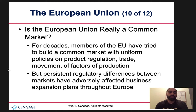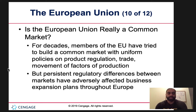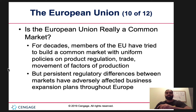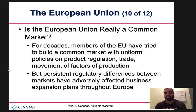Is the European Union really a common market? For decades, members of the EU have tried to build a common market with uniform policies on product regulations, trade, and movement of factors of production. But persistent regulatory differences between markets have adversely affected business expansion plans throughout Europe. With 18 or 28 countries in one geographic location, each with different ideologies, rules, and regulations, it's very hard to achieve a truly common market.